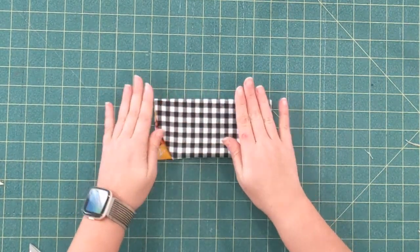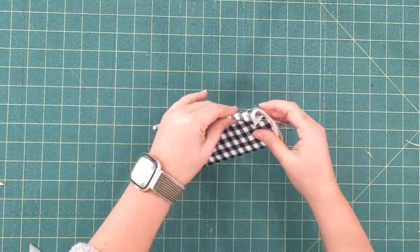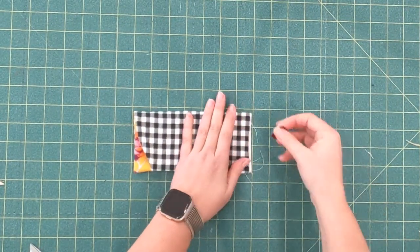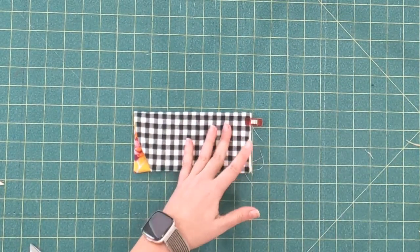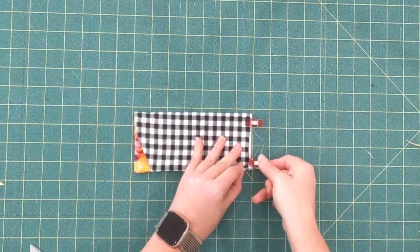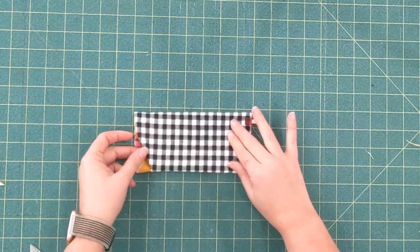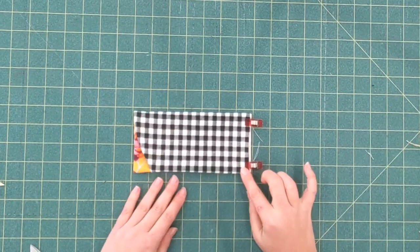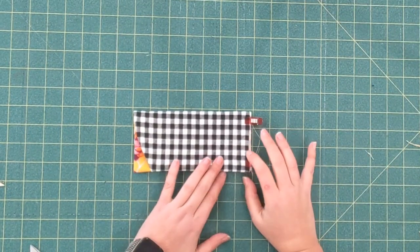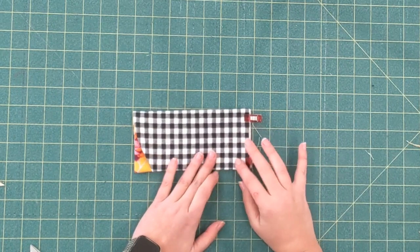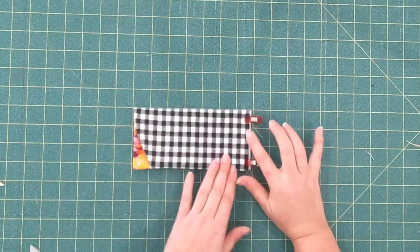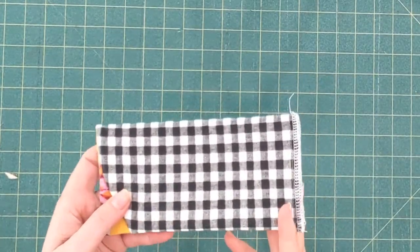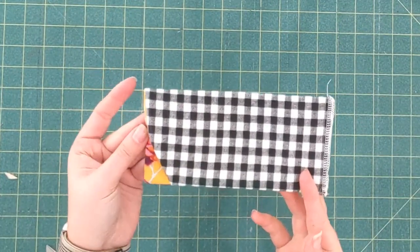So you have the lining right sides out and what we're going to do is stitch this bottom edge together. You're going to use a quarter inch seam allowance on the bottom and then finish the seam with a zigzag or a serger so it doesn't fray. My bottom is stitched together now and I finished it with my serger.